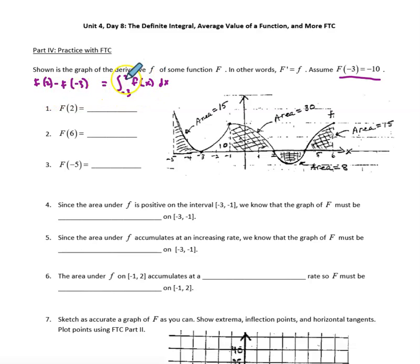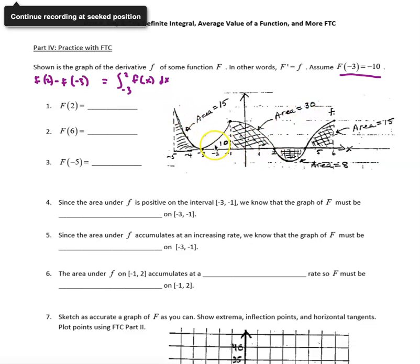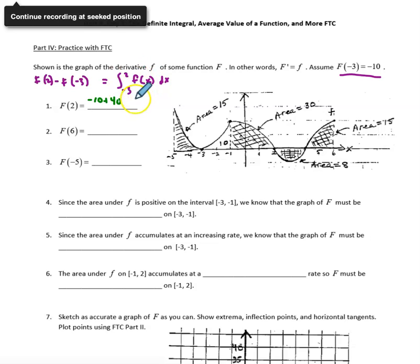Through the graph, I can calculate the integral of little f from negative 3 to 2, because from negative 3 to negative 1 I have 10, and then from negative 1 to 2 I have 30. So that total integral is going to be 40. Rewriting the equation by adding big F of negative 3 to both sides, big F of 2 equals big F of negative 3, which is negative 10, plus 40, so big F of 2 is 30.